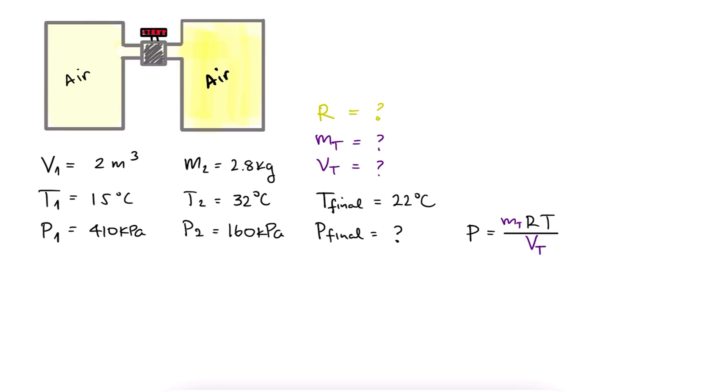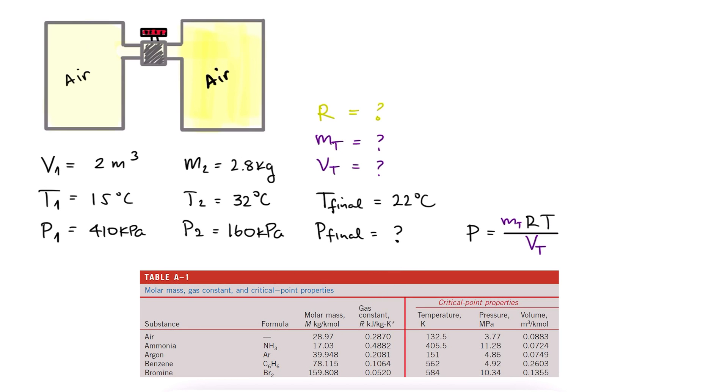The gas constant for air can be looked up or, like I mentioned in the main lecture video, you could use the universal gas constant R bar and divide by the molar mass of air. Either way, we get 0.287 kilopascals cubic meter over kilogram Kelvin.